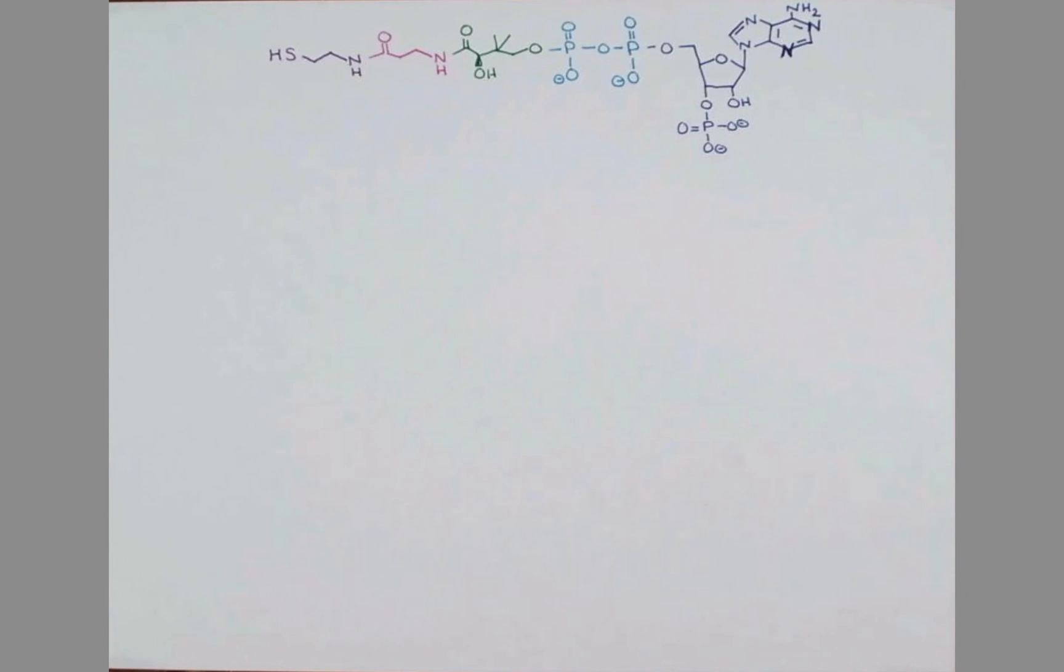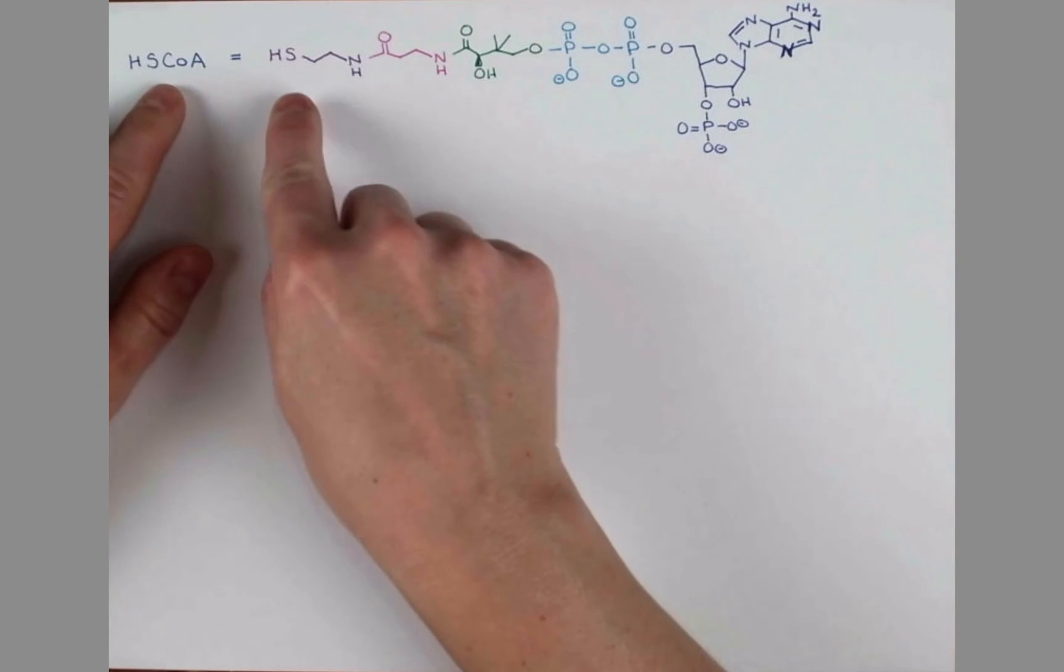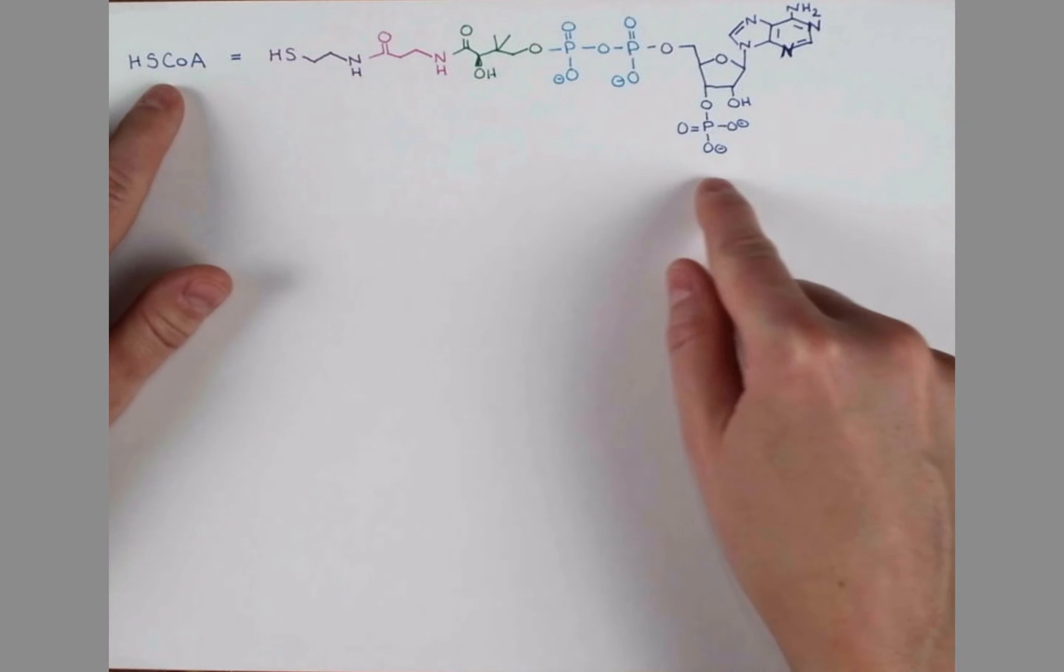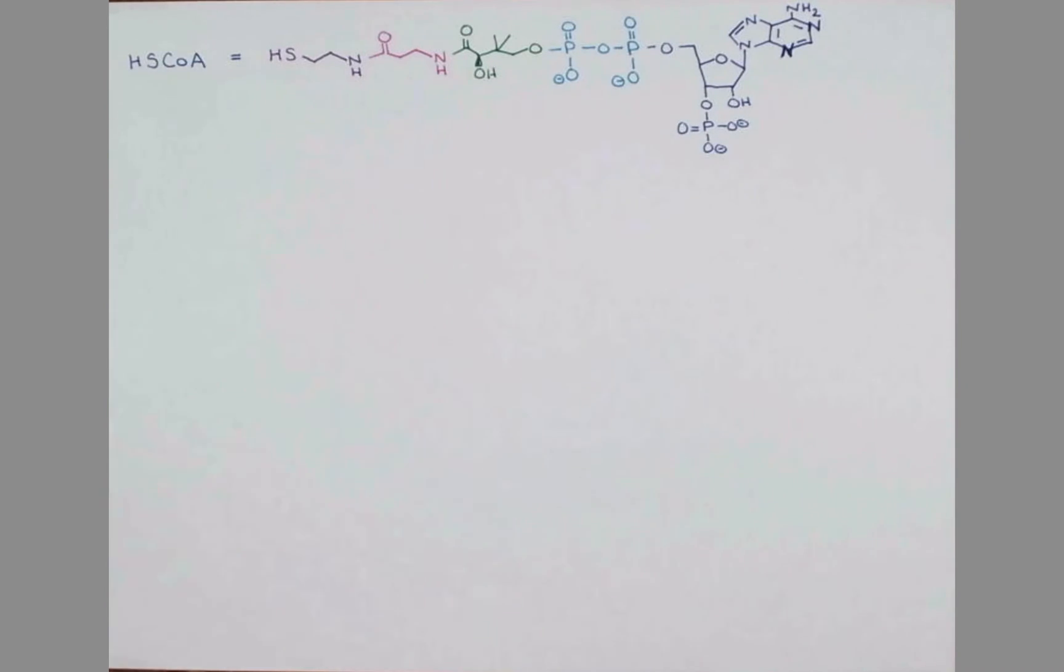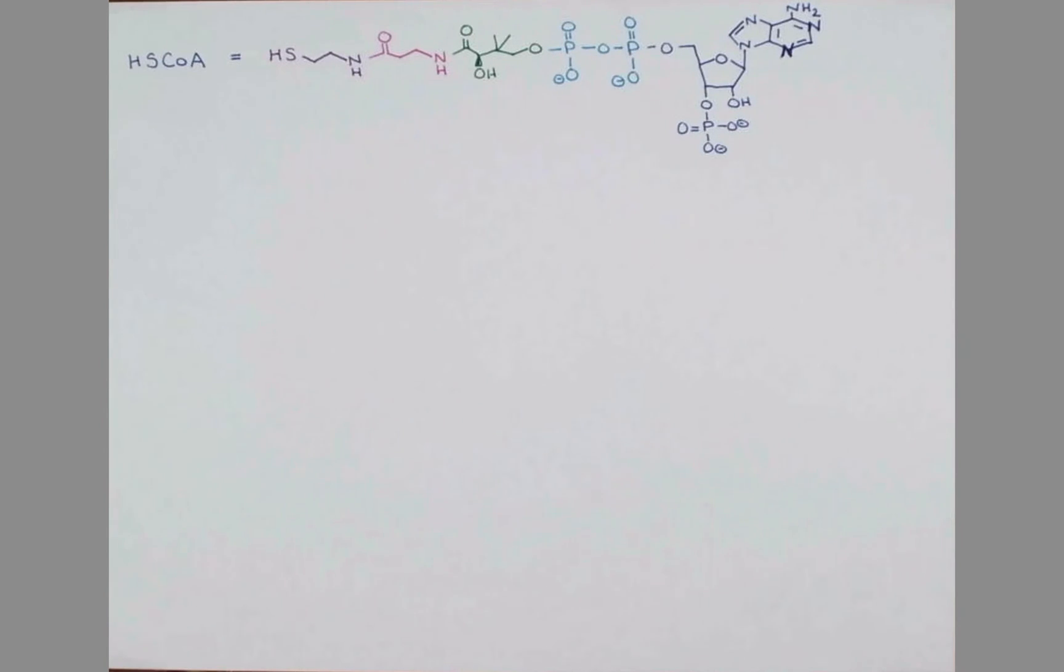You might not have realized coenzyme A is so large of a molecule because we often abbreviate it like this. It looks a lot smaller when it's written out as these five letters. So here, we're abbreviating everything from here on as this CoA, and we just show the HS because that's really where the important chemistry happens with this molecule linking up with other molecules.